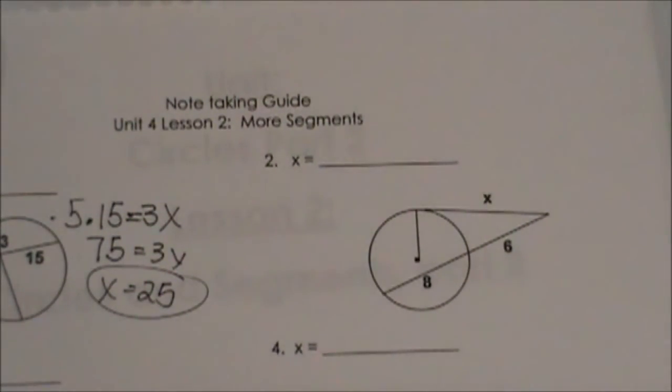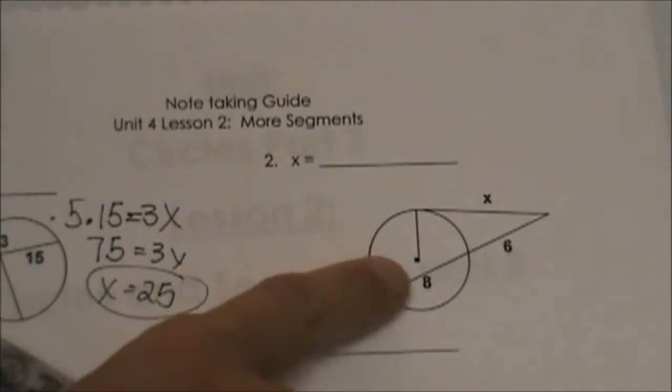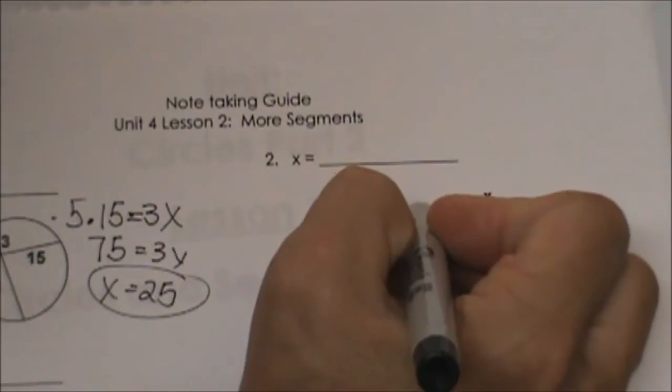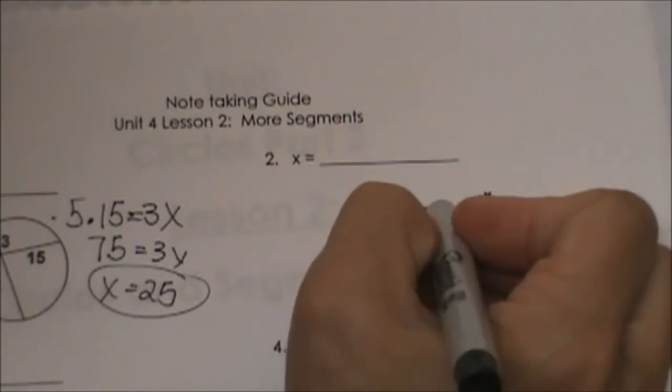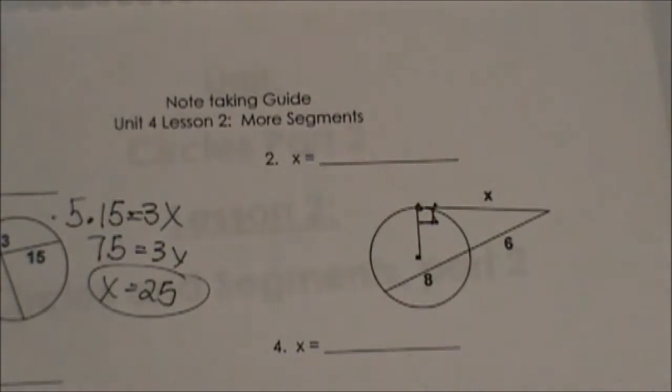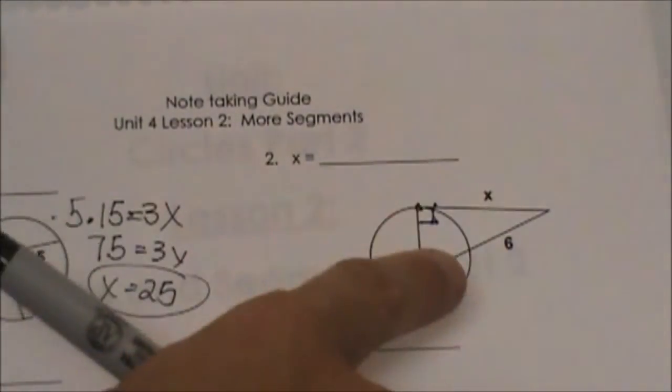The second one: we don't have a right angle, so we don't know that's a tangent. But we do know that this is a radius, and if this is a radius, then we can draw in a right angle. So now we know that segment is tangent. That was one of the rules from the last unit about tangents and radius in the circle.